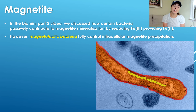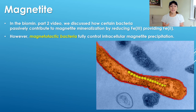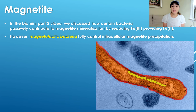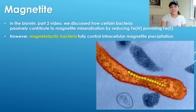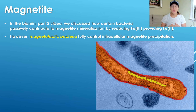In the part two biomineralization video, we discussed magnetite already — however, we discussed it regarding its biologically induced formation rather than its biologically controlled mineralization. This is very different. Instead of passively contributing to magnetite formation by reducing iron 3 to iron 2, the bacteria involved in this process — called magnetotactic bacteria — control magnetite formation within their cell, intracellularly. We can actually see this in the picture here, which I included as the thumbnail. They form these chains of magnetite that align with magnetic fields in their cell and therefore can align themselves along magnetic field lines.